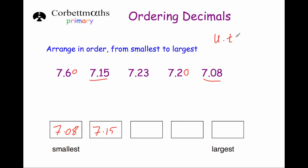So let's look at the hundredths column — that's units, then decimal point, then tenths, then hundredths. The second number after the decimal point: 7.23 has a 3 in the hundredths column and 7.20 has a 0. So 7.20, or 7.2, is the next smallest. I'll drop the trailing zero since I'm writing exactly what was given. Then comes 7.23, and the largest is 7.6.